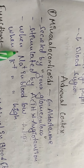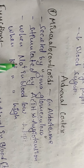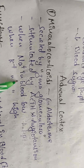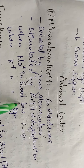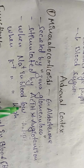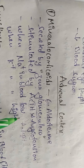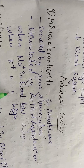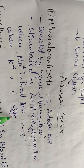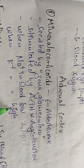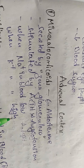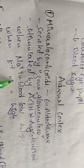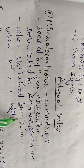When potassium ion concentration in the blood is high, and sodium levels decrease, aldosterone is released. High potassium in blood and decreased sodium levels trigger the release of mineralocorticoids.